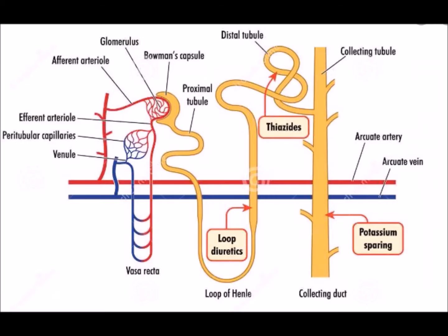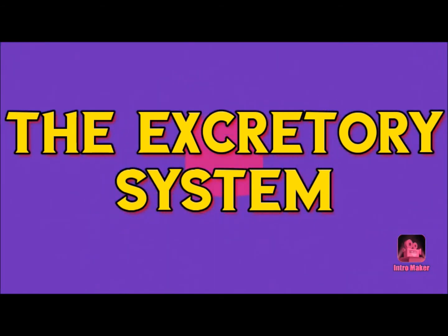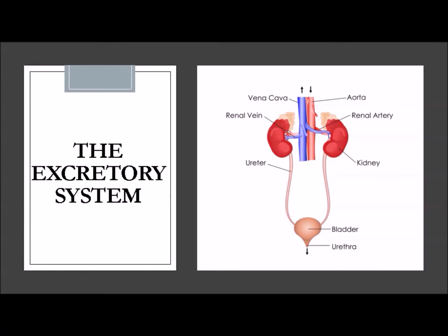We now head to the third section of the project, where we will be discussing the excretory system with the help of a working model. First, we will look at how urine, which is formed in the kidneys, makes its exit out of the body through the excretory system.